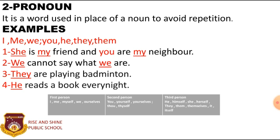The second one is Pronoun. It is a word used in place of a noun to avoid repetition. For example: 'Ali is absent because Ali is ill.' But it is better to avoid repetition of the noun Ali: 'Ali is absent because he is ill.' Ali is a noun and 'he' is used in place of Ali, so 'he' is a pronoun.